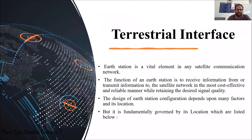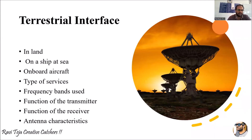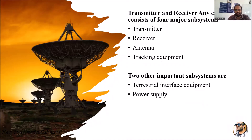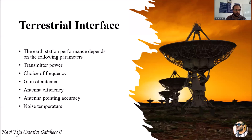All of this terrestrial interface is essentially the earth stations located at several places — it can be on land or on any mobile carrier. As the location changes, the equipment used also changes, which plays the role of transmitter, receiver, and tracking system. We need to consider the transmitted power, the choice of frequency, antenna gain, antenna efficiency, antenna pointing direction, and noise temperature to ensure good signal quality.